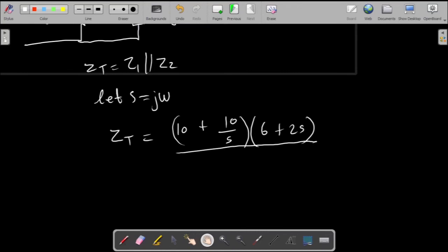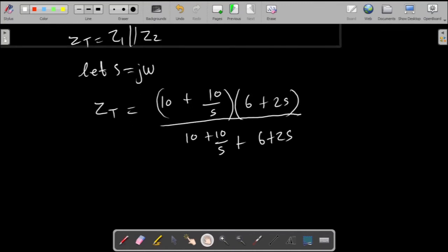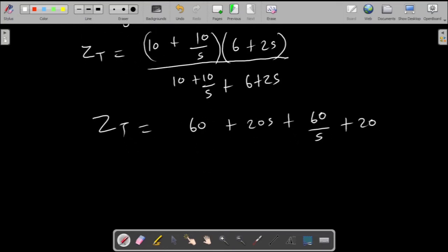Then at the bottom we're going to add them up, this is how you compute the parallel combination of two impedances. Coming down here, we're just going to multiply through and make this out. So you're going to have 60 at the top plus 20s plus 60 over s, plus 20, divided by...